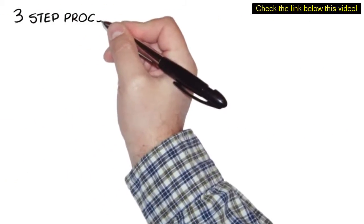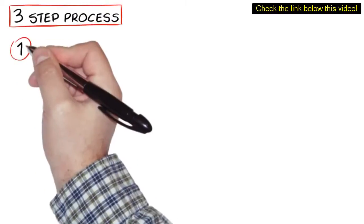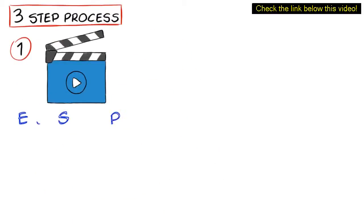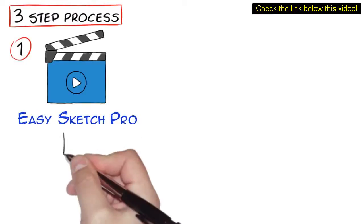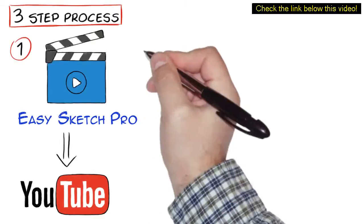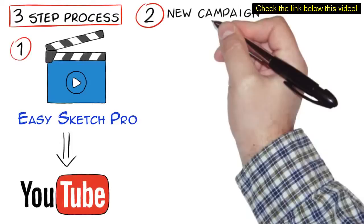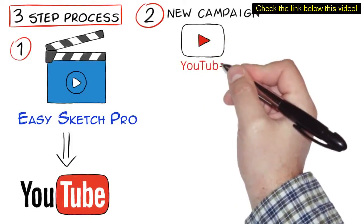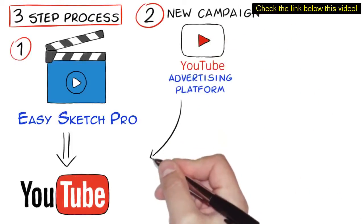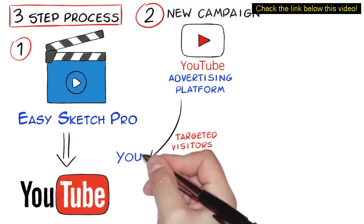It's a simple three-step process. Step 1: Create an attention-holding video using EasySketch Pro or your favorite video software and upload it to YouTube with a link in the description and caption back to your website or offer. Step 2: Create a new campaign using the YouTube video advertising platform and superdrive targeted visitors to your video.